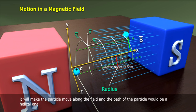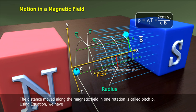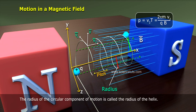The distance moved along the magnetic field in one rotation is called pitch P. Using equation, we have P = V₂ T = 2 pi M V₂ / Q B. The radius of the circular component of motion is called the radius of the helix.